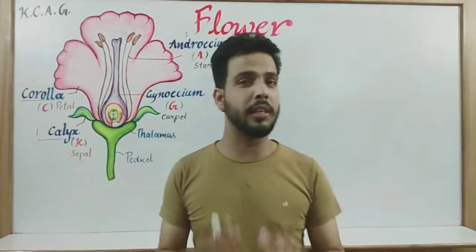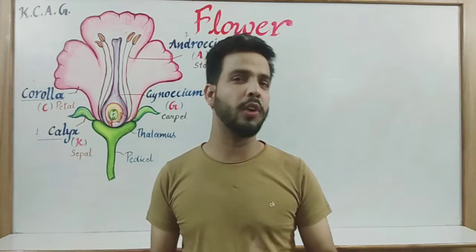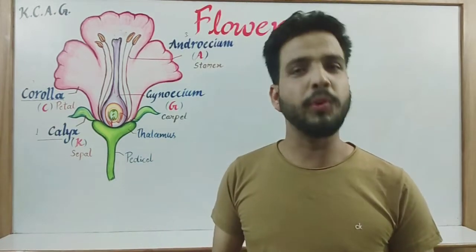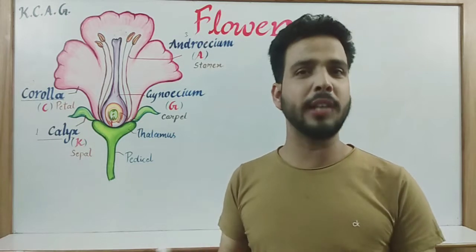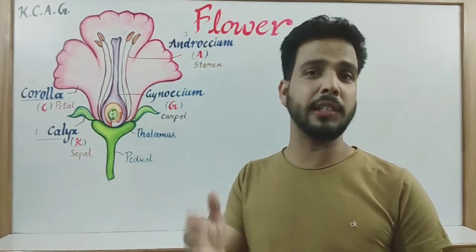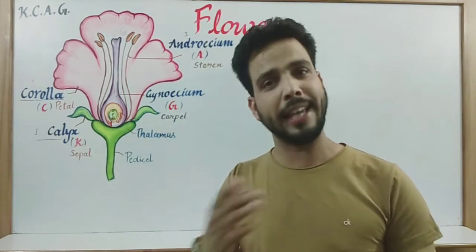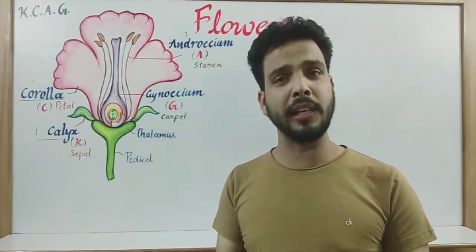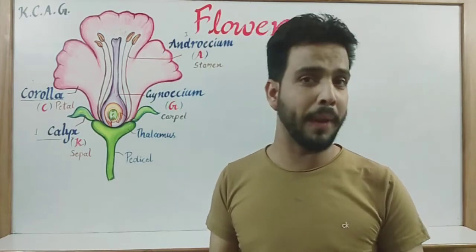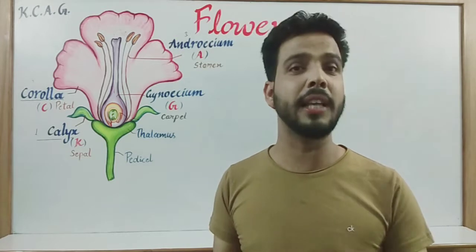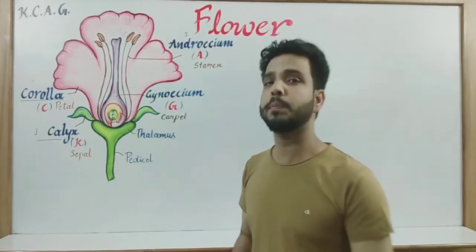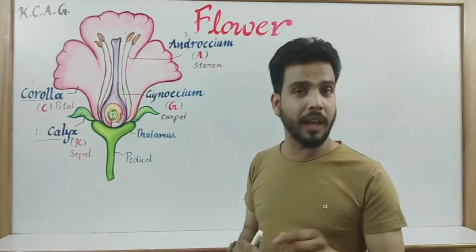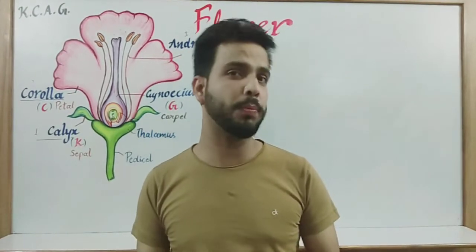As we all know, flower is the reproductive part of an angiospermic plant. All the plants of the world have been categorized in different types of groups, such as algae, bryophyta, pteridophyta, and gymnosperm. The most developed group of plants is termed as angiosperm, and the special feature of angiosperm is that it consists of a flower. Flower is the reproductive unit of an angiospermic plant.